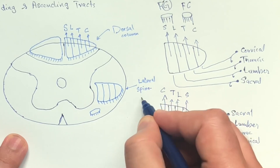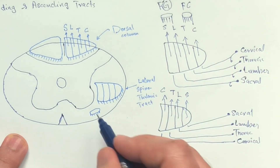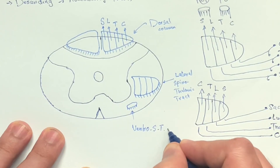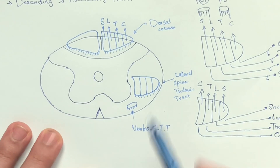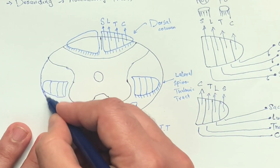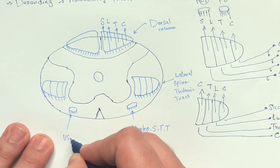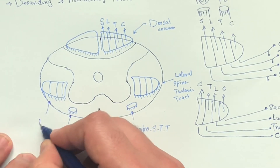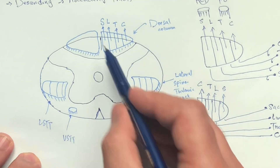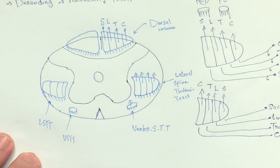The lateral column has two tracts. One is the dorsal column — the posterior one — and this one is the lateral. It's the spinothalamic tract, going from the spinal cord to the thalamus. That's why the name is spinothalamic tract, and it has a ventral — the anterior system as well. So the ventral spinothalamic tract, and on the other side as well, the same tracts: the lateral spinothalamic tract and the ventral spinothalamic tract, as you see in the picture drawn. So these are the ascending tracts.